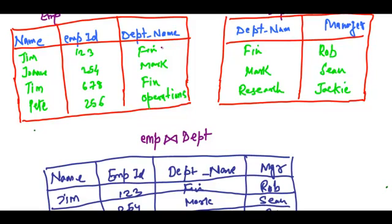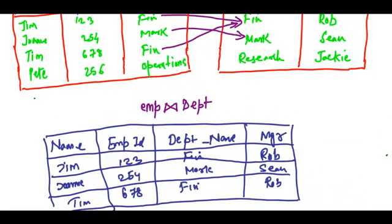Just realize here, the information regarding the Pete tuple is lost in this natural join.